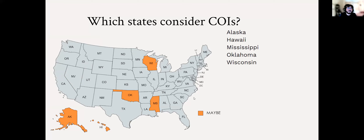Another example is Mississippi. They follow criteria based on a court case which references community of interest twice, but never explicitly states that it was a goal. So through court cases, through the redistricting body, or the constitution itself, we give these states our best guess as a maybe based on the evidence we have.